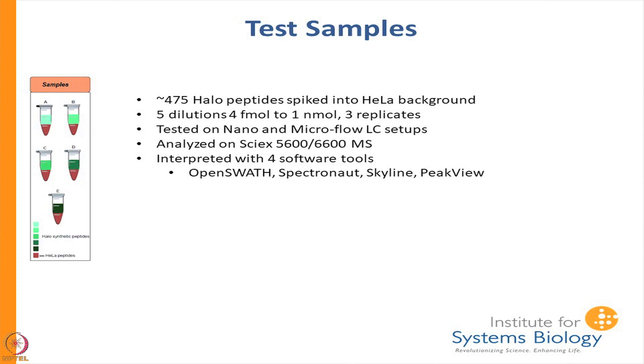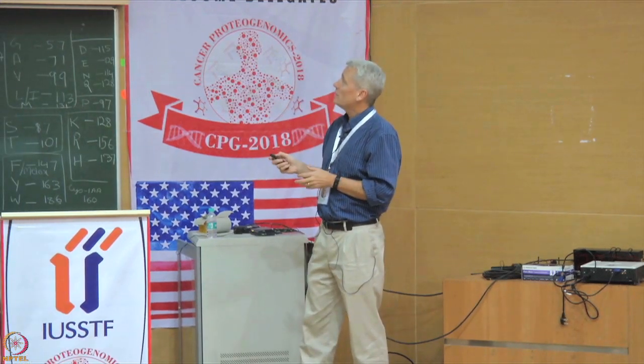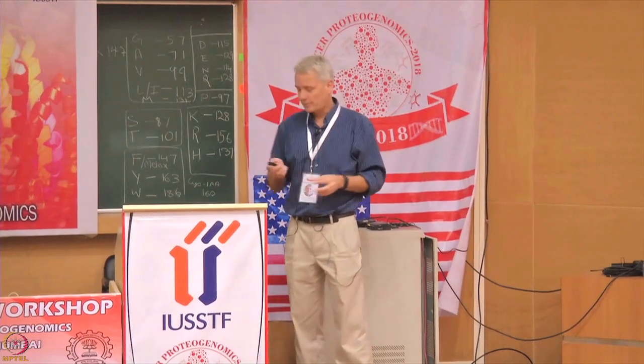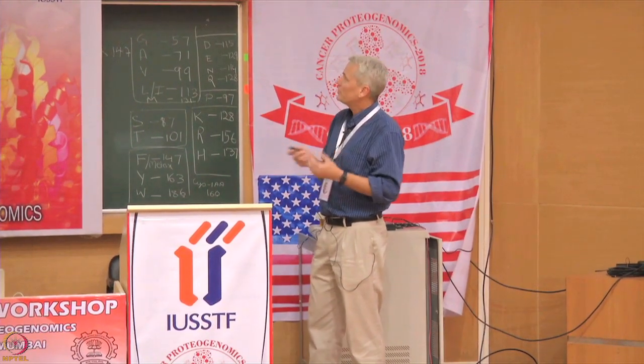Now a real-world example. We took HeLa cells — one of the oldest cell lines, taken from a woman in the early-to-mid 1990s, grown from a cancer, the first cell line to become widely available and still in use today. We spiked in halo peptides at different concentrations — halo is just a different organism than human. We wanted to see if, given this complicated background, we can detect these spiked-in halo peptides. Five different dilutions ranging from 4 femtomole to 1 nanomole, three replicates each, tested on nano and microflow LC, two different instruments, interpreted with four different software tools — resulting in 360 different measurements per point. We ran against PHL and this is what we saw.